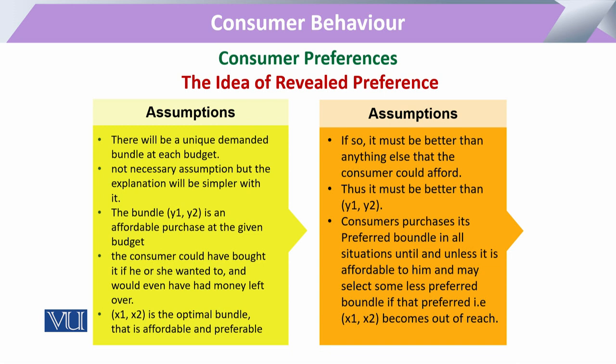One bundle may have more quantity than another — consumer ki affordability ho sakti hai ke wo basket A, basket B, basket C — kuch bhi ho — sab ko khareed sakta ho. Lekin jis basket ko, jis bundle ko wo purchase karega, uss ke liye hum kahenge ke this basket and this bundle is preferred to the others, kyunki affordability us ke paas teeno bundles ki thi.